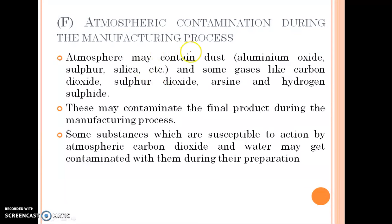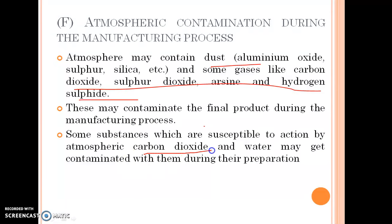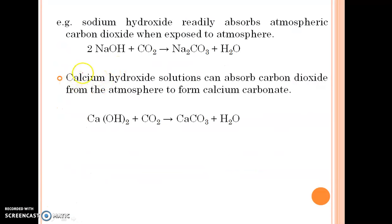Atmospheric contamination during the manufacturing process: the atmosphere may contain dust such as aluminium oxide, sulphur, silica etc., and gases like carbon dioxide, sulphur dioxide, and hydrogen sulphide. These may contaminate the final product during manufacturing. Some substances which are susceptible to atmospheric carbon dioxide and water may get contaminated during their preparation. For example, sodium hydroxide plus carbon dioxide gives sodium carbonate plus water. Calcium hydroxide solutions can also absorb carbon dioxide from the atmosphere to form calcium carbonate.